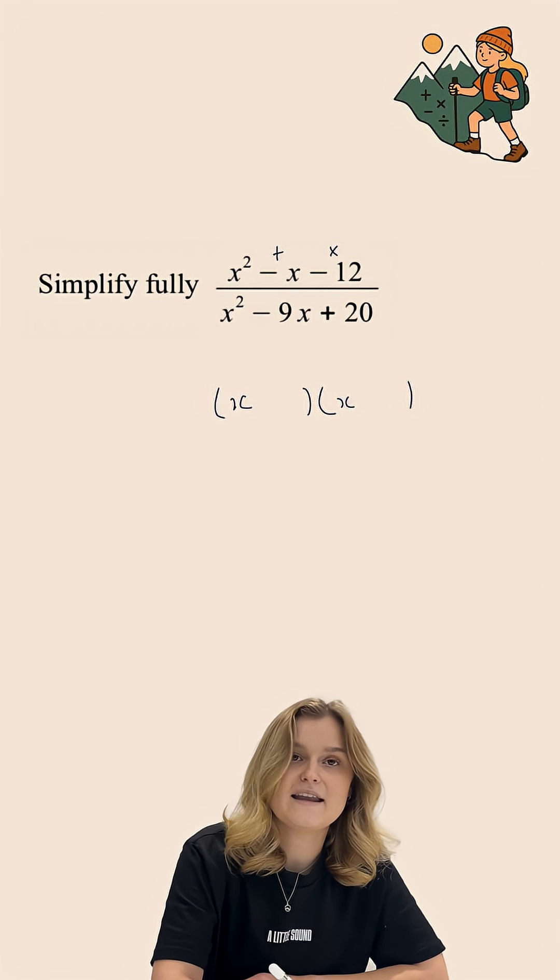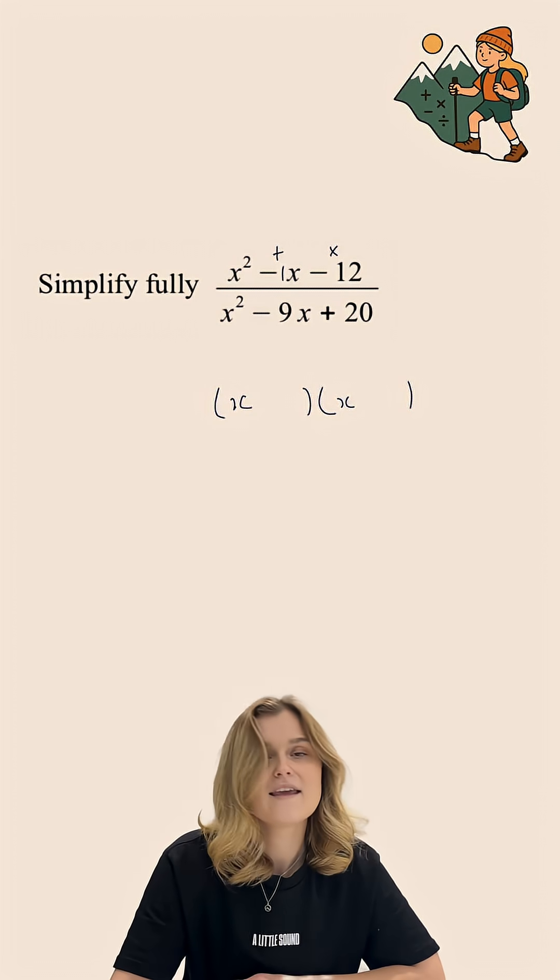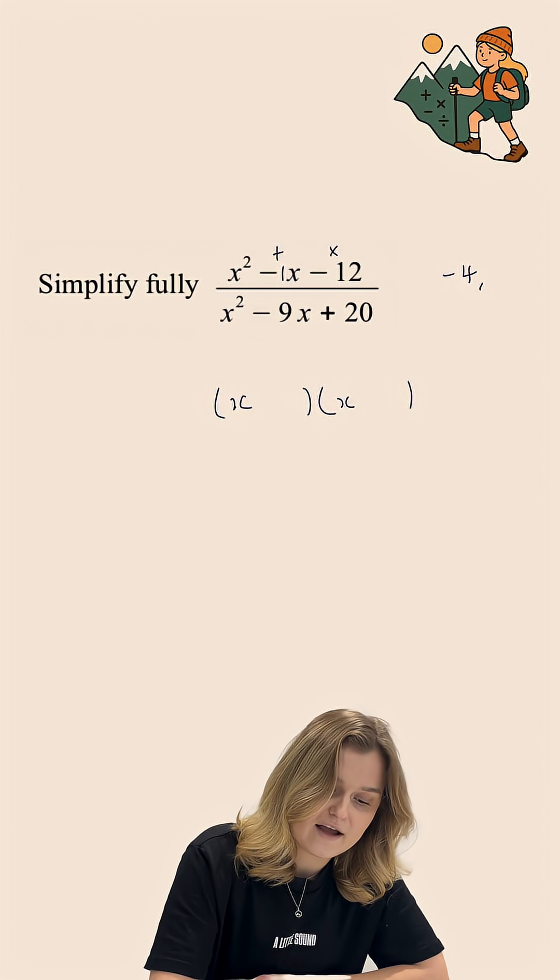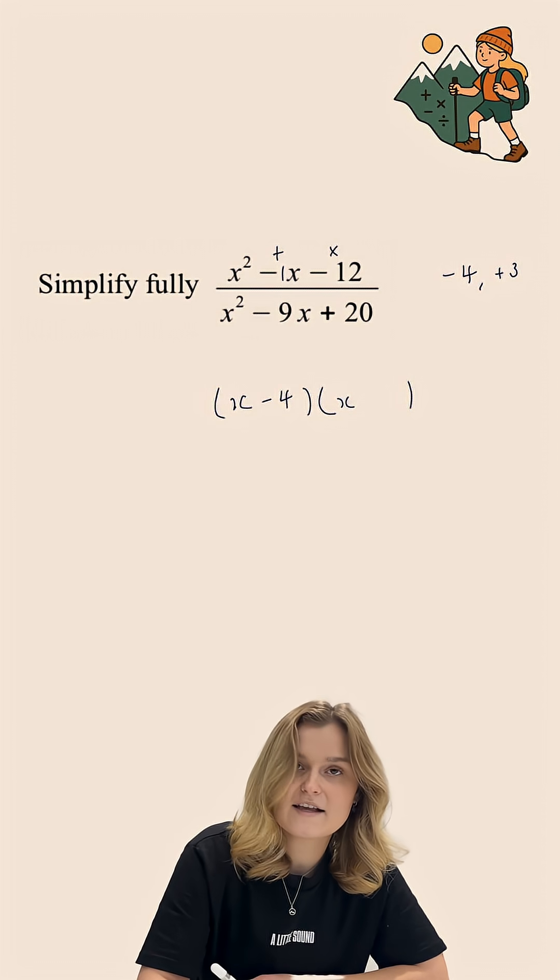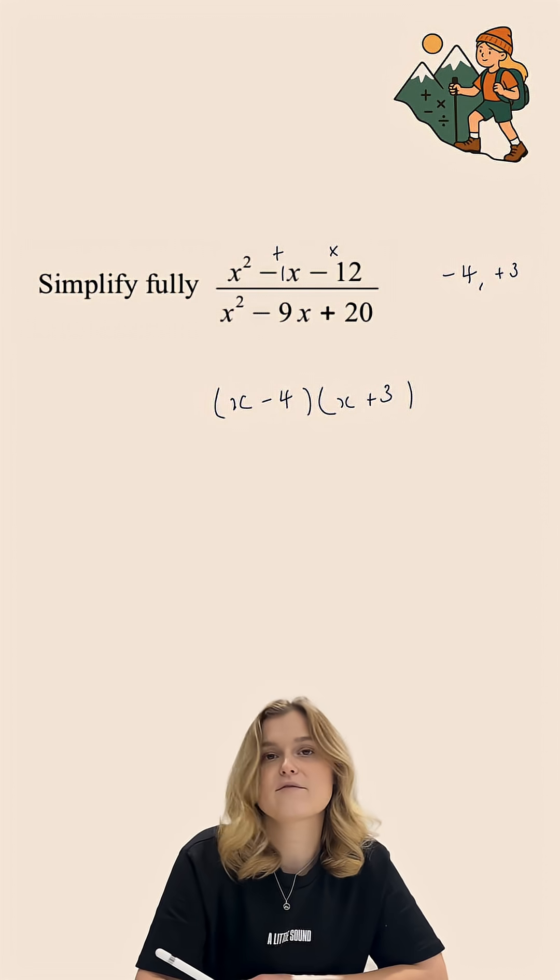and when I add them, they make negative 1. These two numbers are going to be negative 4 and positive 3. So, inside my brackets, I've got x minus 4, and I've got x plus 3.